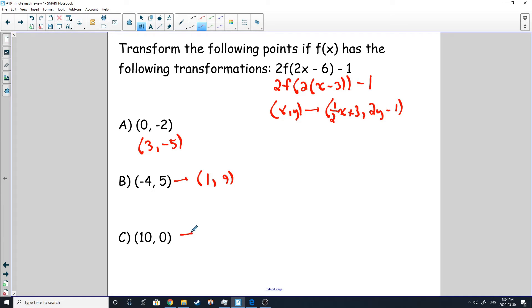And for our last one here, we got, let's see, 10 times a half is five plus three is eight. So there we go. And then zero times two is still zero, subtract one is negative one. There we have it.